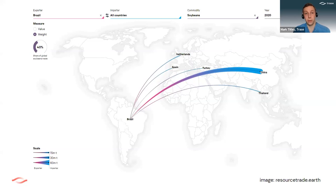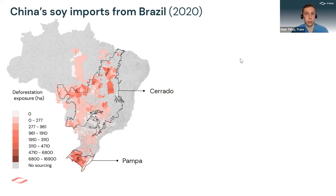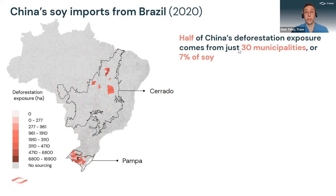This is where TRACE data can be really useful. This is the data we have on China's soy imports from Brazil in 2020. Zooming in on exports going to China, we can map where China is most likely to be exposed to deforestation. There's quite a broad distribution, but actually it's pretty concentrated in two regions: the Cerrado biome in central and northeastern Brazil, and the Pampa biome in the southernmost part of Brazil. The darker the colours on this map, the more deforestation that China was exposed to. Up to half of China's deforestation exposure comes from just 30 municipalities, which make up just seven percent of China's soy imports — so it's really concentrated in some specific places.